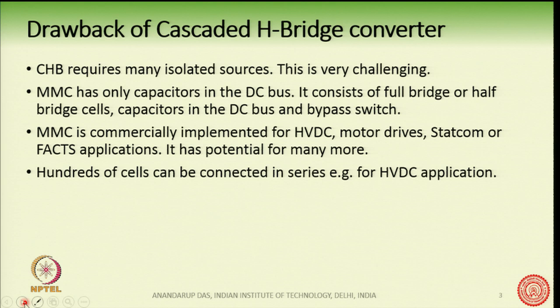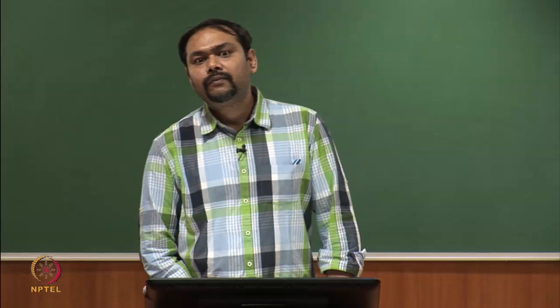MMC does not require any isolated DC source or transformer-fed DC sources. It has only capacitors in the DC bus. At the same time, it retains the advantages of modularity and scalability — many identical low-voltage cells are cascaded to produce very high voltage. The advantages of CHB are retained in MMC, but the requirement for isolated DC sources is removed.